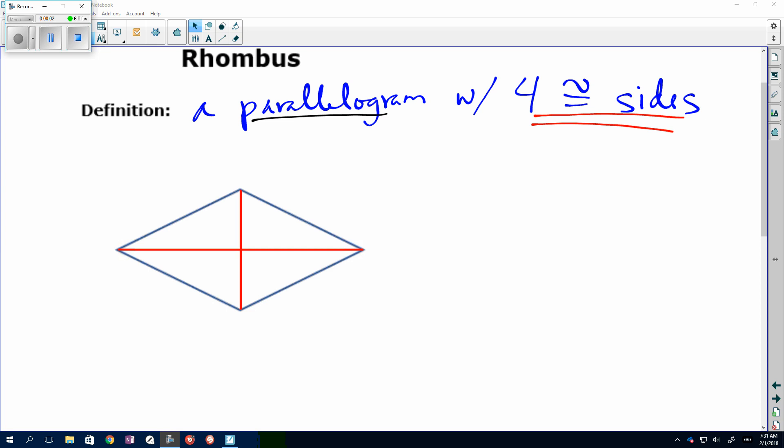OK, notes for our rhombus. By definition, a rhombus is a parallelogram with four right angles. So we're going to go ahead and show that with our arrows. Opposite sides are parallel.